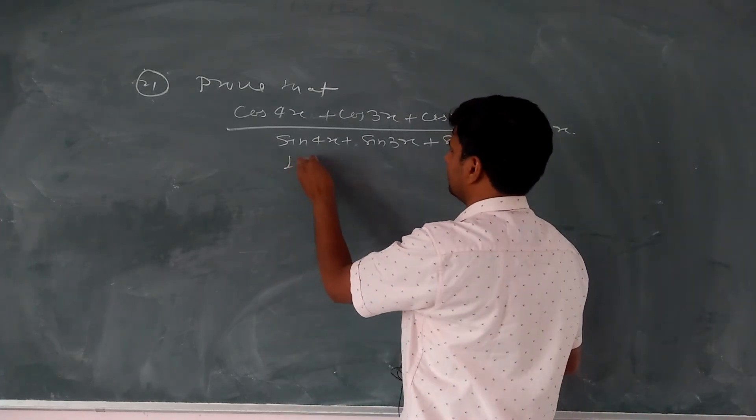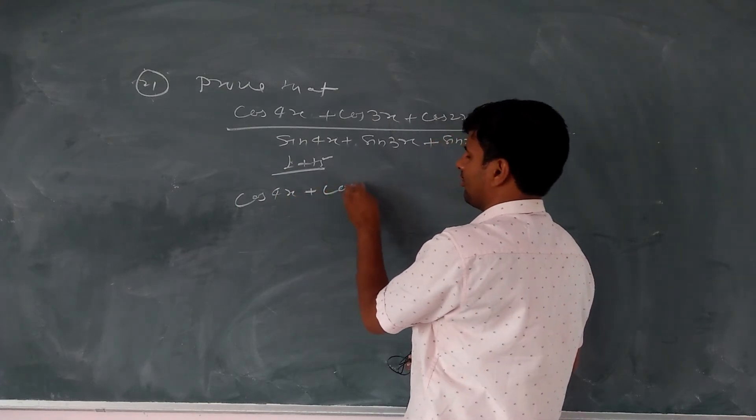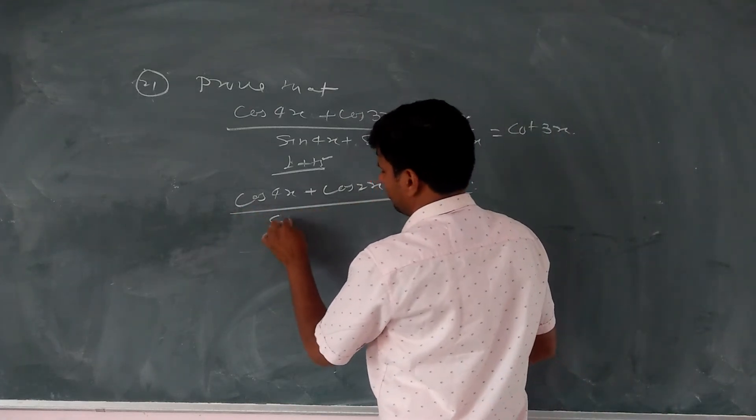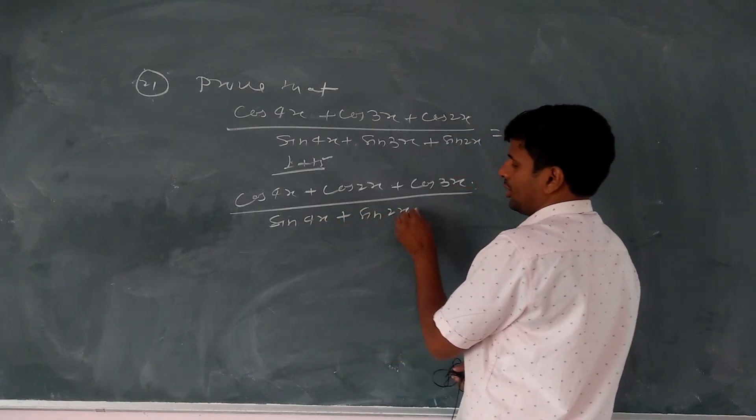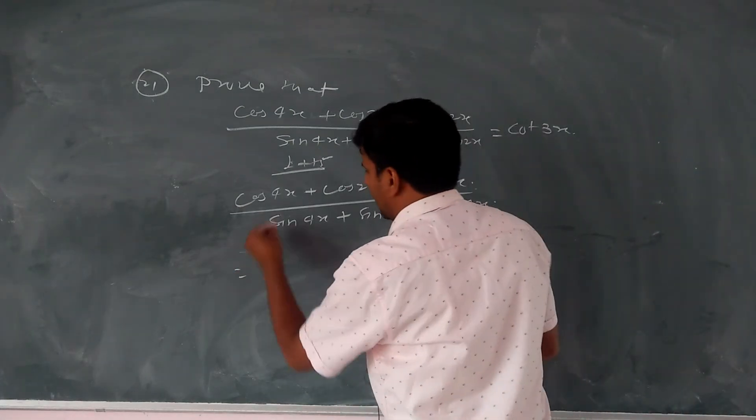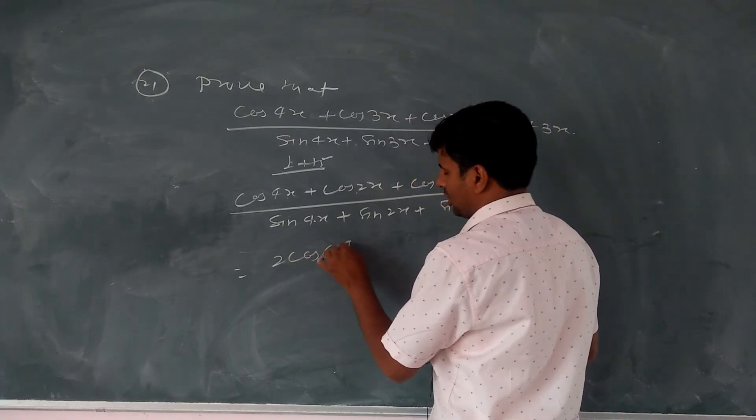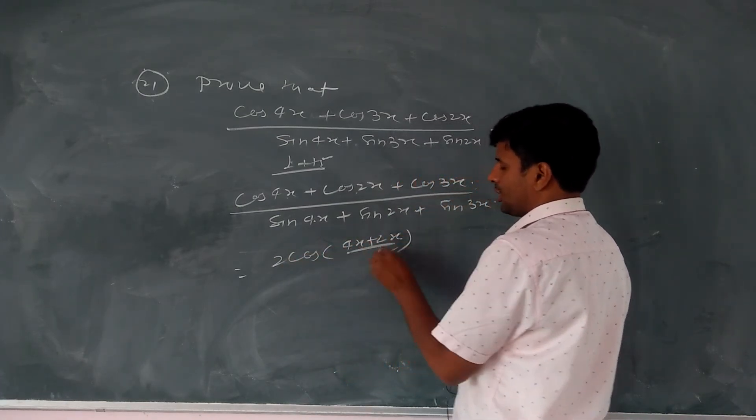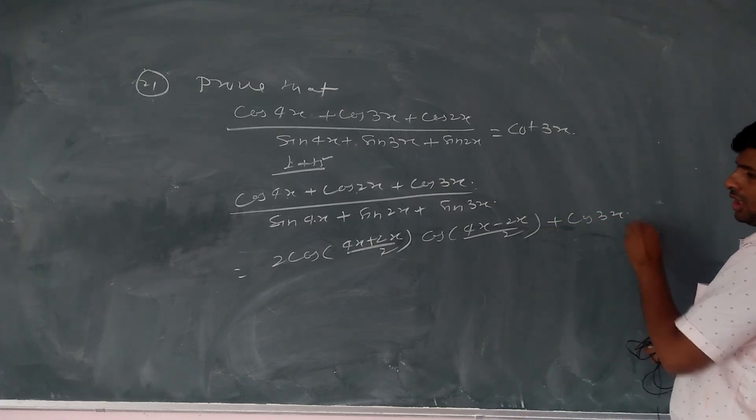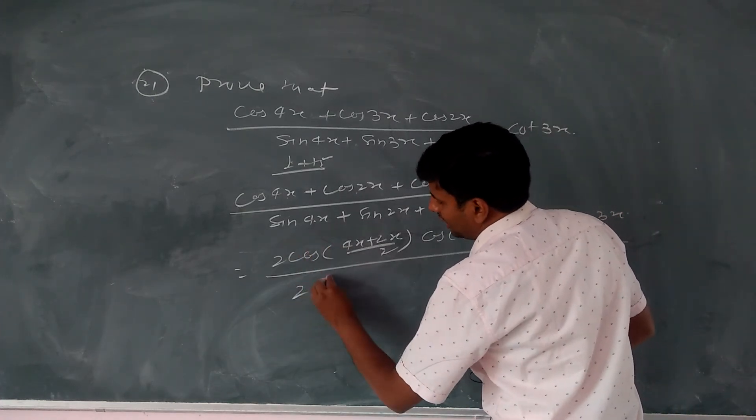So we can do question number 21. Cos 4x plus sin 3x. Alright, so we can do this for the other two parts. Okay. So we can do this. Then, which sound of the last part can be? Cos 4x and cos 2x plus sin 3x plus sin 2x.